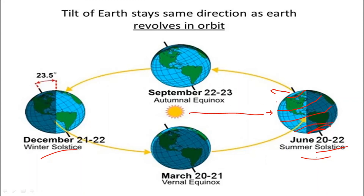In this situation, the North Pole experiences 24 hours of daylight, while the South Pole receives no sunlight at all. There is summer in the northern hemisphere and winter in the southern hemisphere. Areas beyond the Arctic Circle receive daylight for all 24 hours. This is the longest day and shortest night in the northern hemisphere, but the reverse is true in the southern hemisphere — it is the longest night there. This situation is called the summer solstice.